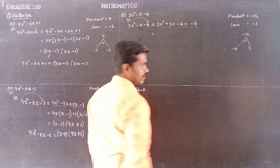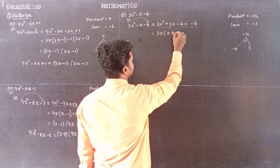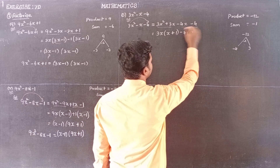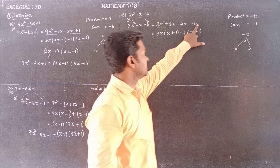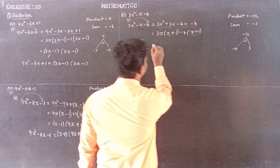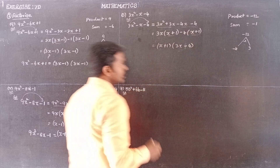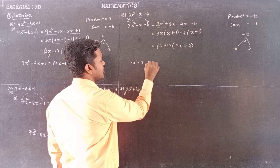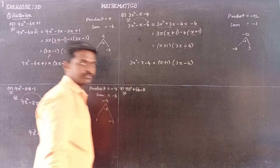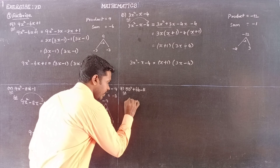Grouping the first group: 3x is a common factor, giving 3x(x plus 1). In the second group, minus 4 is common, giving minus 4(x plus 1). Therefore, 3x squared minus x minus 4 equals (x plus 1)(3x minus 4).